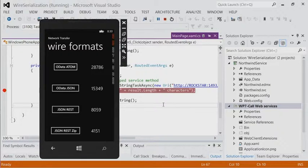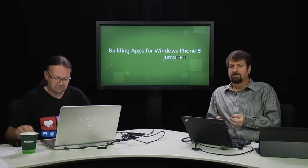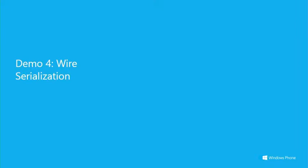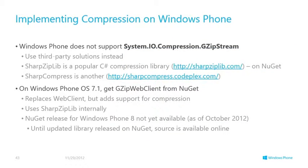You've just transferred the same data over the wire in four different formats — 28k atom XML, 15k verbose JSON, 8k JSON Lite, 4k gzipped JSON Lite. That speaks volumes. You need JSON Lite and compression. This goes back to empathy for the end user and their scenario — love your user so that they love you.